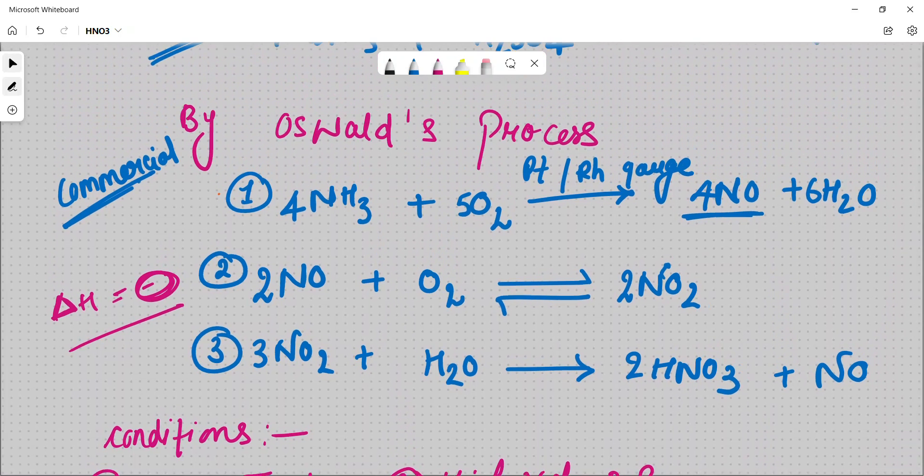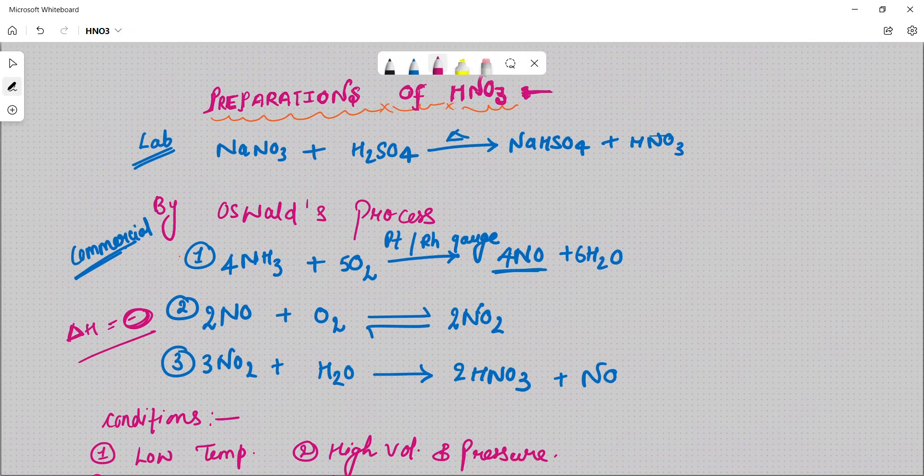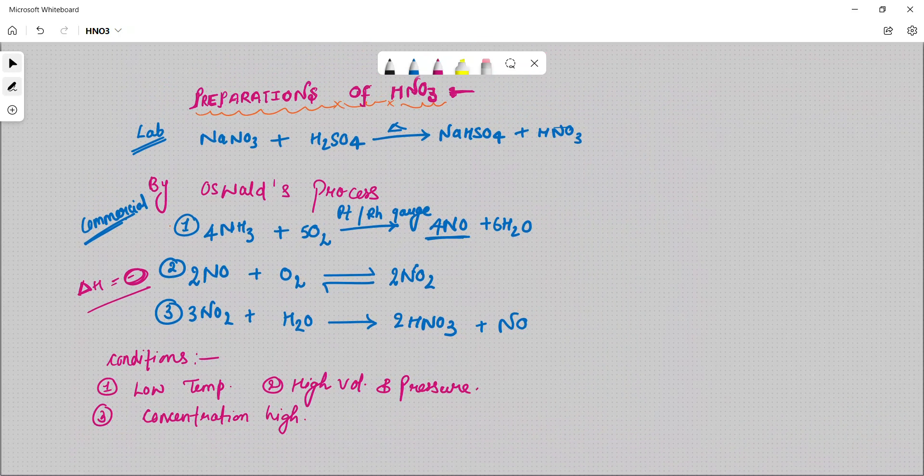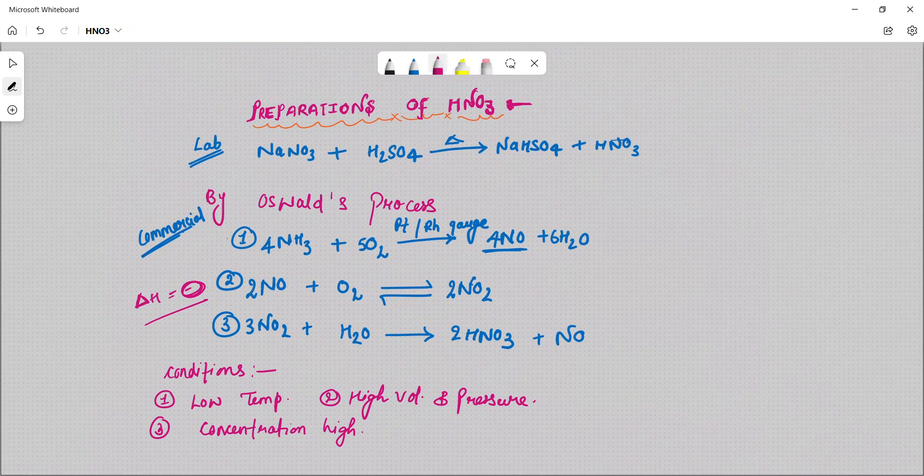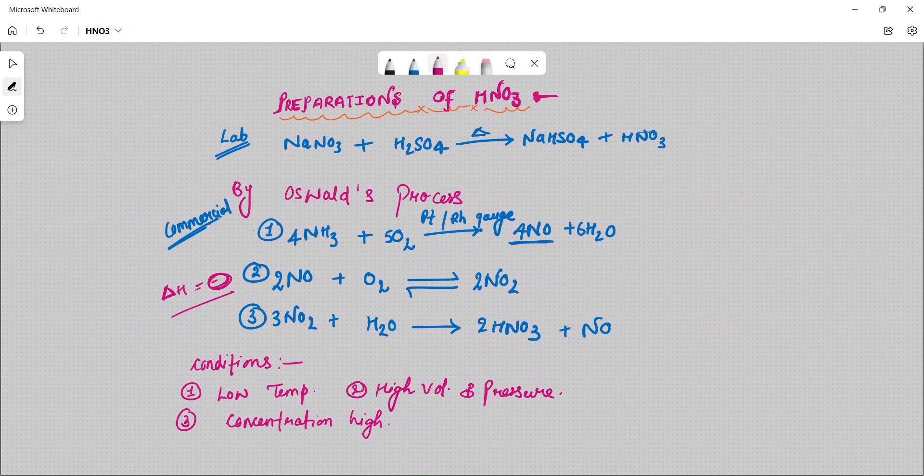We can also prepare HNO3 commercially. I think this process was very simple and you will have learned. Ostwald process is one of the most important processes for class 12 students.